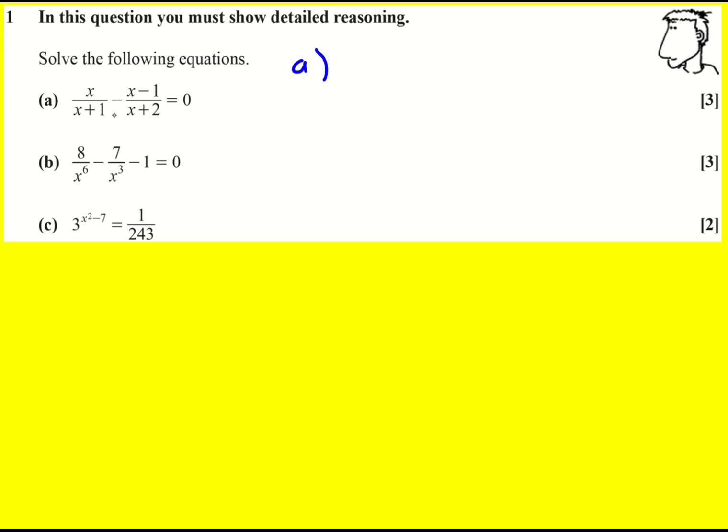Now we could multiply through by x plus 1, x plus 2 straight away, but you might find it a little bit easier to first of all add the x minus 1 over x plus 2 to both sides.